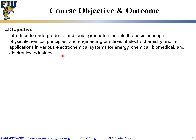Let's talk about course objectives and outcomes. The objective of our course is to introduce undergraduate as well as junior graduate students to the basic concepts and physical-chemical principles of electrochemistry — for example, what is a battery, what is an electrolyte, what is an anode, what is a cathode.